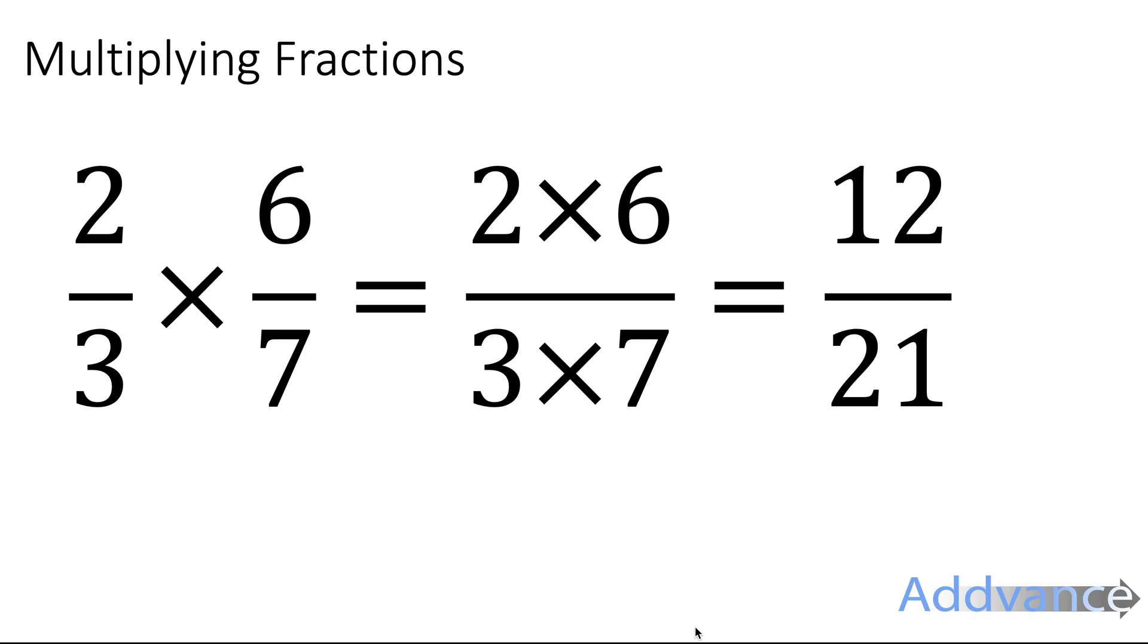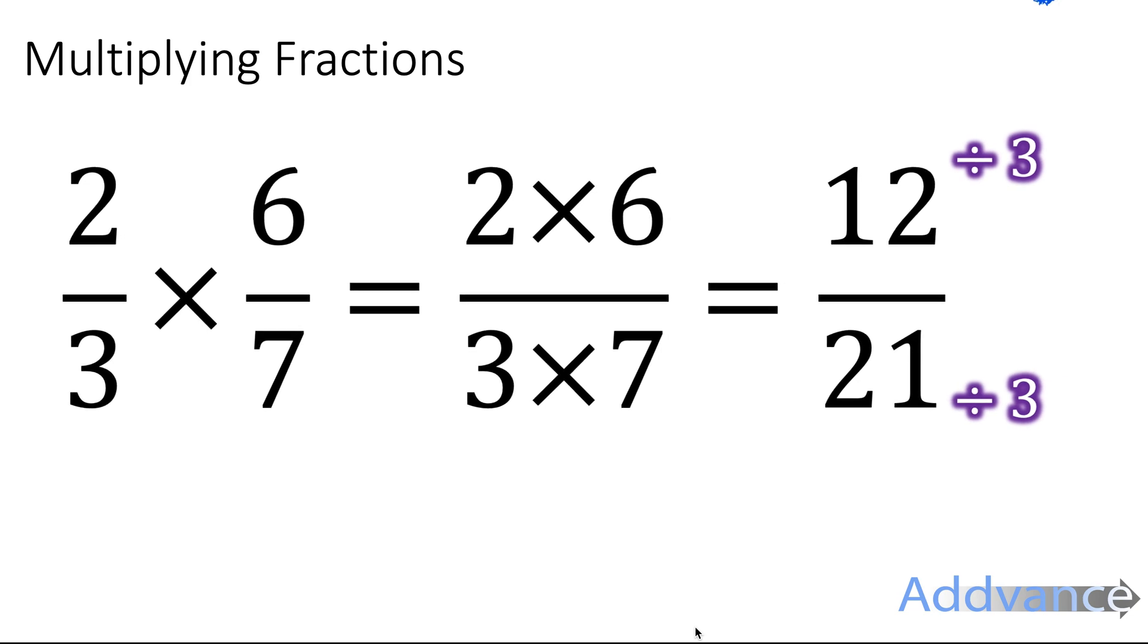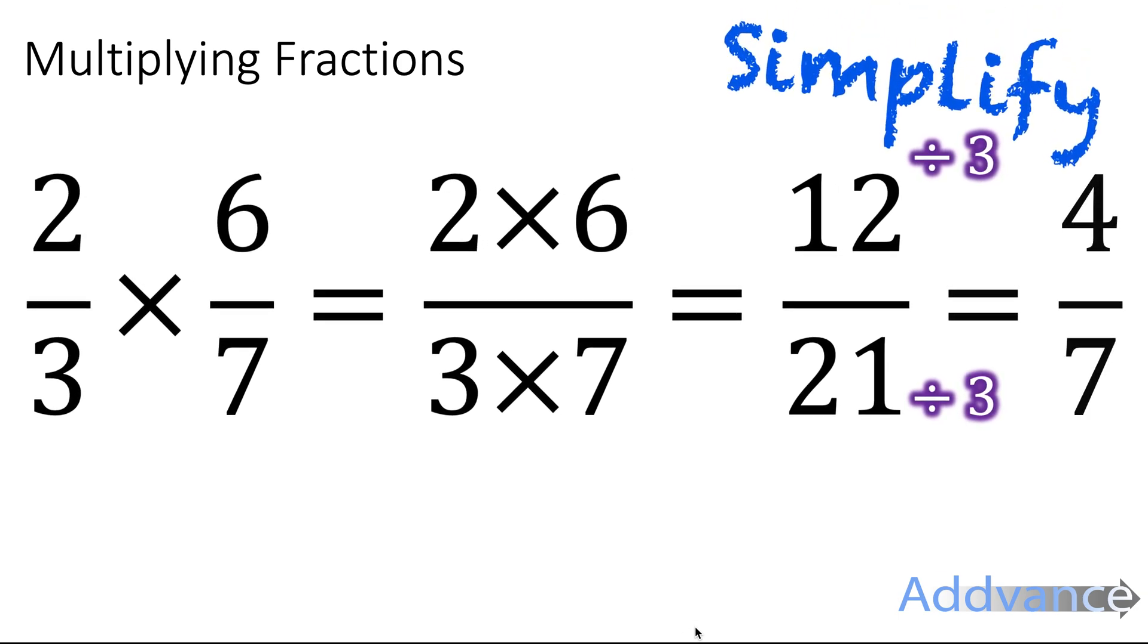Now as ever we need to simplify our fraction, and we simplify this fraction by dividing the top and the bottom by 3. We will get 4 sevenths as the final answer.